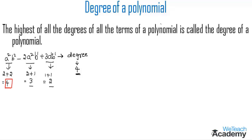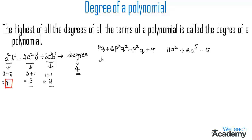Now let us consider a few examples. The first polynomial is pq plus 6p squared q squared minus p squared q plus 9. The degree of the first term is 2. The degree of the second term is 2 plus 2, which is 4. The degree of the third term is 2 plus 1, which is 3. The degree of the constant term is 0. The highest degree is 4, so the degree of this polynomial is 4.